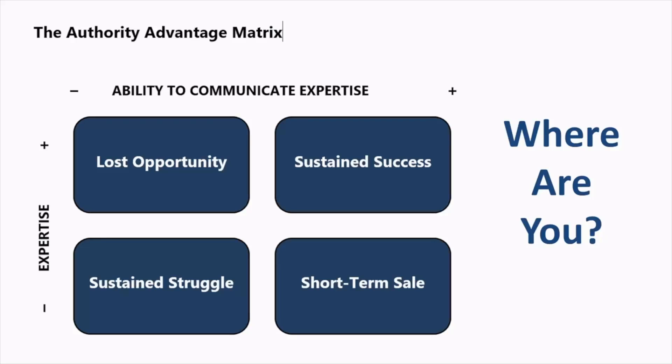As we begin, I want to talk to you about a concept called the Authority Advantage Matrix. It's simply a two-by-two matrix with the ability to communicate your expertise across the horizontal axis and your actual expertise on the vertical axis. Working with independent advisors and consultants, I begin with this to understand where my client is, because we all want to move and stay in the upper right quadrant — the sustained success quadrant.